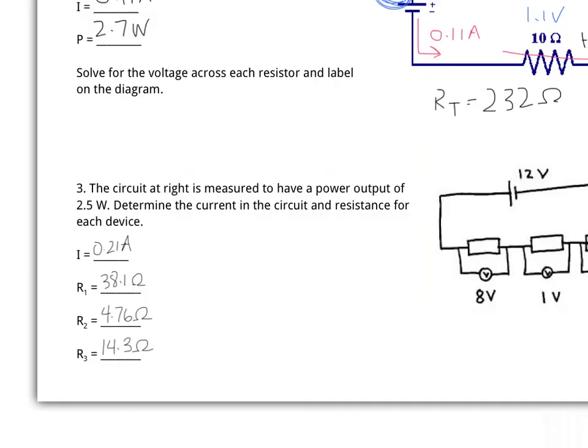Number three works out very similarly to numbers one and two, so I'll just provide the answers. The total current is 0.21 amps. The resistance for resistor one is 38.1 ohms, resistor two is 4.76 ohms, and resistor three is 14.3 ohms.